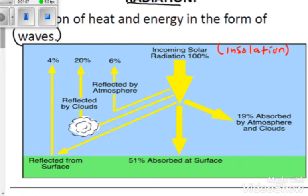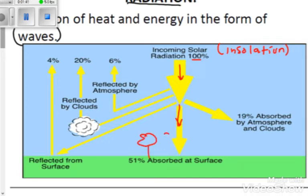The incoming solar radiation comes in at 100% because it hasn't been spent on anything yet — it hasn't been distributed to any place. When it reaches the earth, as indicated by the arrow going down, it is first absorbed at the earth's surface — the ground where we find trees, buildings, and people.